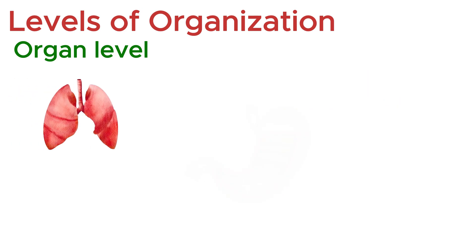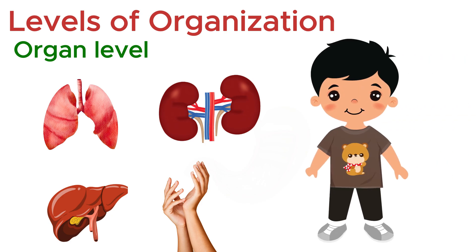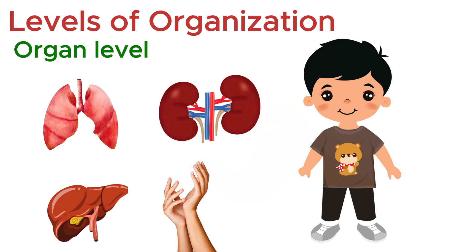Other vital organs include the lungs for breathing, the liver for detoxification and metabolism, the kidneys for filtering blood, and the skin, which acts as the body's largest protective barrier. Each organ has a specialized role, but together they form the foundation of complex body systems. Without organs, the higher levels of organization could not exist.